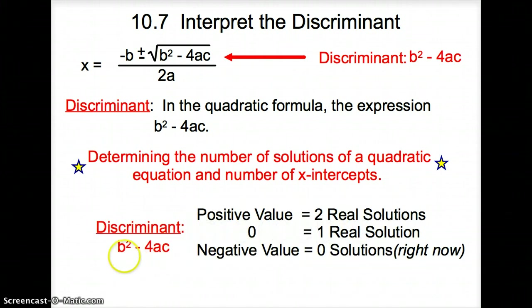Again, discriminant is b² minus 4ac. If it is a positive value, you will have two real answers. If it gives you zero, you will have one real solution. And if it is a negative value, you will have zero solutions right now. It will change a little bit once you get to Algebra 2.